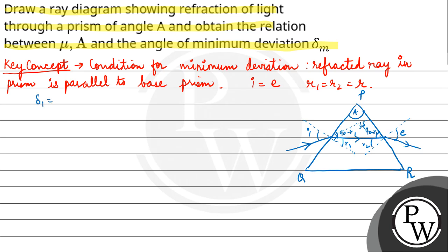Delta 1 would be equal to I minus R1. And delta 2 is equal to E minus R2. So delta total deviation is delta 1 plus delta 2, which gives I plus E minus R1 plus R2. This is the first equation.